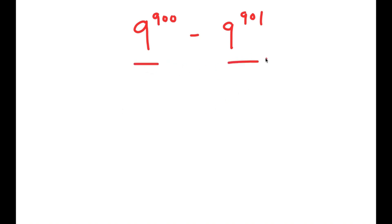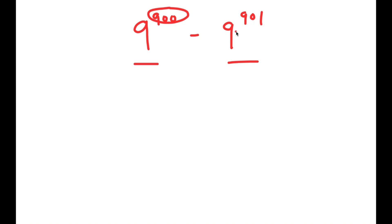We have 9 to the power of 900 and 9 to the power of 901. These two terms are pretty similar except that the exponent for 9^900 is one less than the exponent for 9^901. So the easiest way to solve this is to simplify as much as we can, and a way to do that is to factor out a term.